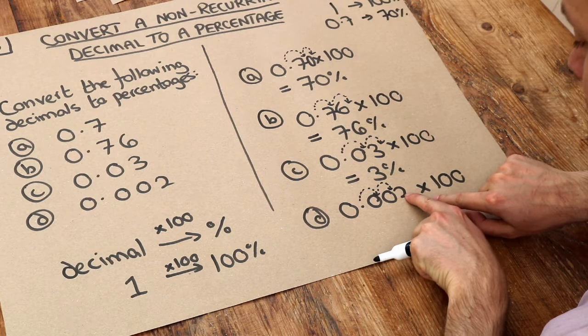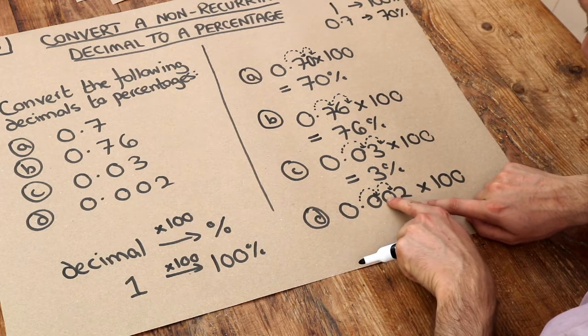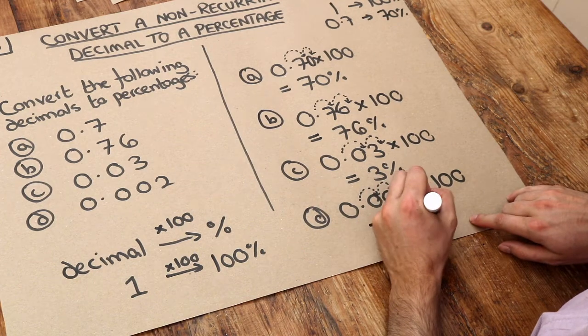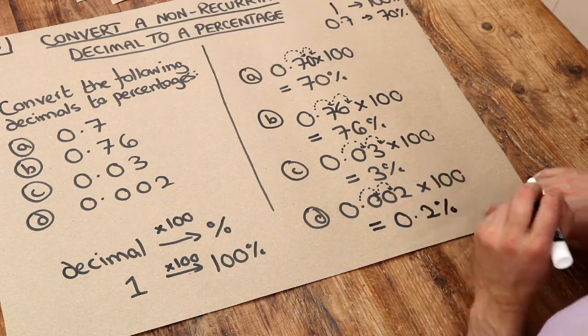We can see it's 0.2. We don't need the extra zeros on the front. So we'll have 0.2%. That's quite a small percentage of something, quite a small fraction of something.